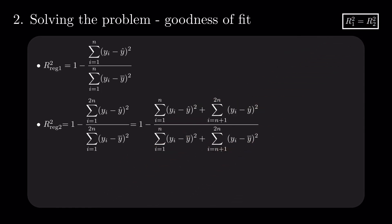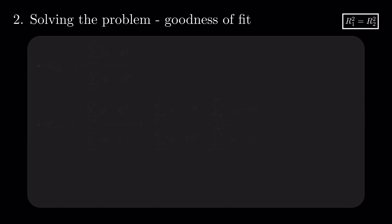One drawback of this measure is that it is susceptible to inflation caused when adding new explanatory variables. One attempt at solving this problem is the correction proposed by Mordecher-Ezekiel, which divides each sum of squares by the corresponding degrees of freedom, n-1 and n-p-1.